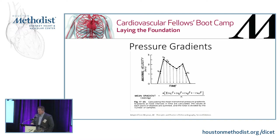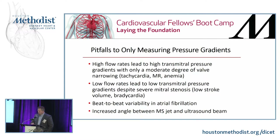How do we actually measure pressure gradients? You can shoot a continuous wave Doppler through various places and calculate mean gradients all throughout the heart. For mitral stenosis, we shoot continuous wave Doppler through the inflow of the mitral valve leaflets. A four-chamber view is a fine place. Once you get your CW Doppler flow pattern, you pause the image, trace it out, and the computer does all the work. High flow states or high flow rates can lead to an elevated transmitral pressure gradient even with only moderate valve narrowing — tachycardia, mitral regurgitation, increased LV volume, or anemia can all lead to a falsely elevated transmitral mean pressure gradient.